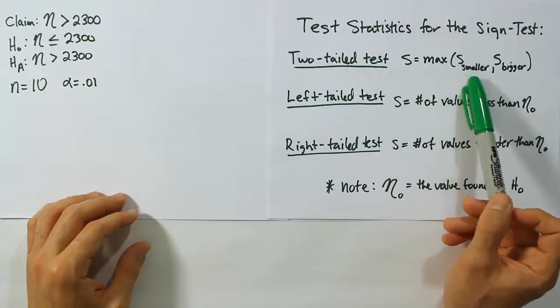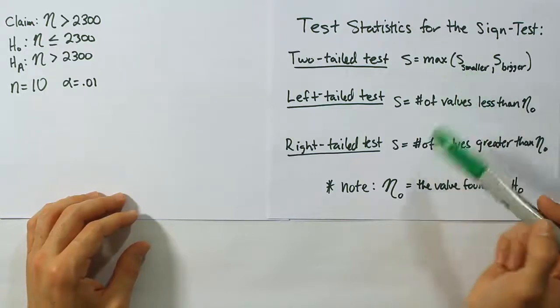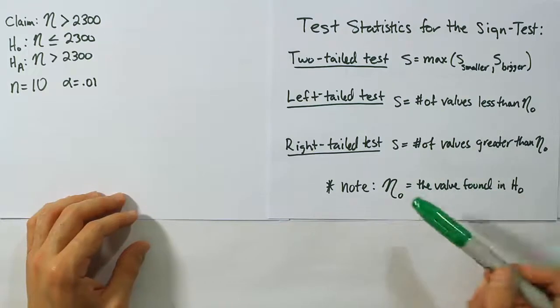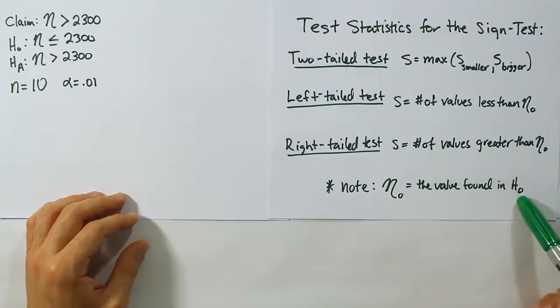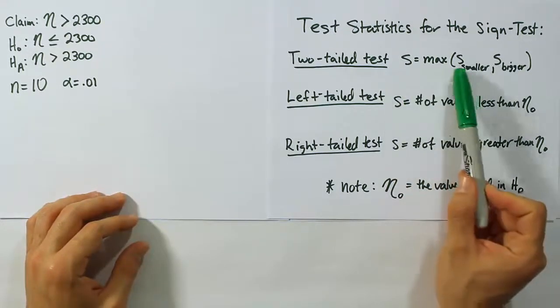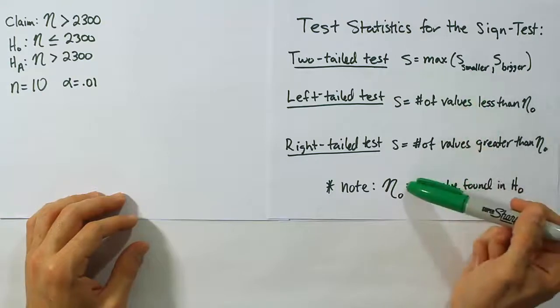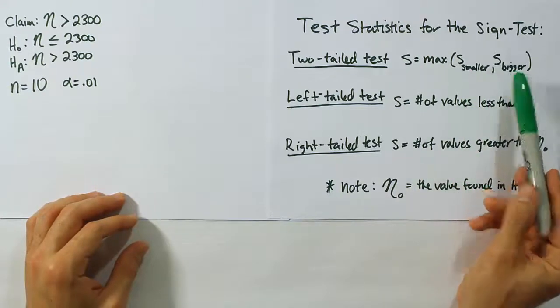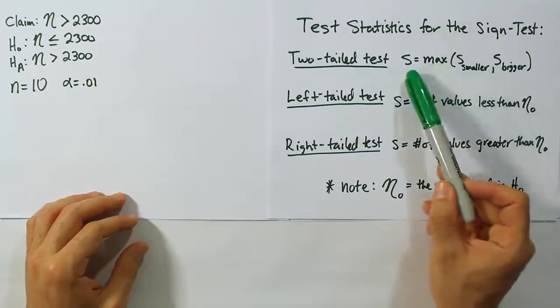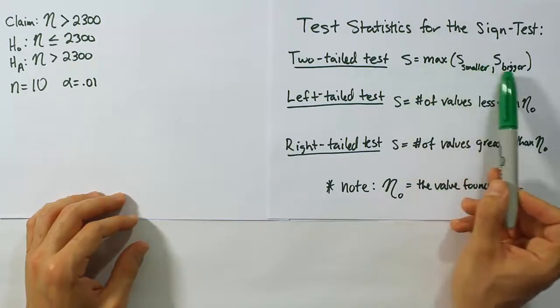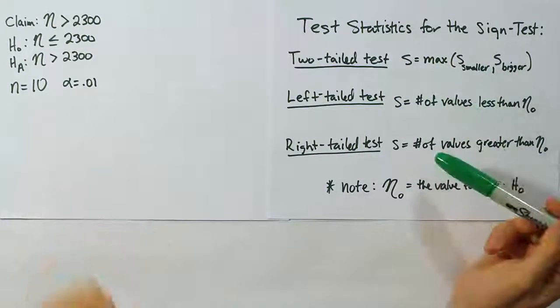Now η naught is the value found in H0. So in this case, S smaller is the number of values smaller than this value. S bigger is the number of values bigger than that value. And of course for the test stat, then we take the bigger of those two numbers, whatever that turns out to be.